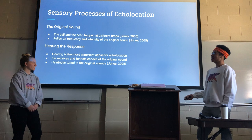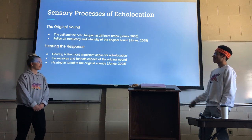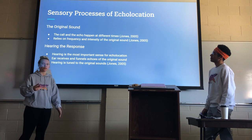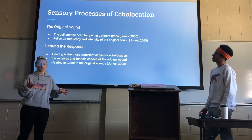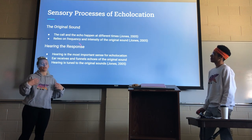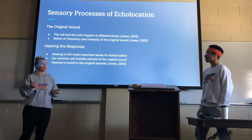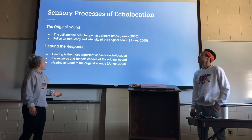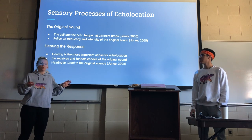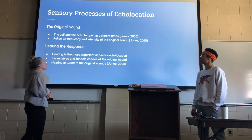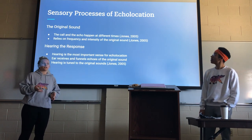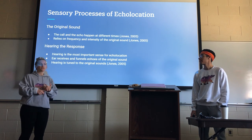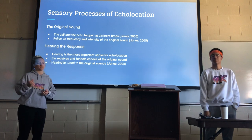Now that we know what echolocation is, what are the sensory processes of echolocation? Echolocation involves two parts. The first part is when the animal actually emits a sound, and the second part is when the animal receives and hears the sound that they make. The call that the animal makes and the echo they hear happen at different times, and the call really relies on frequency and intensity. The more frequent and intense the noise, the better the animal will understand its environment because they'll receive more cues.